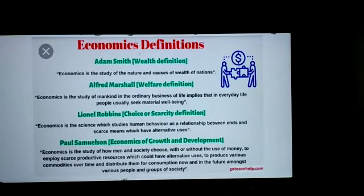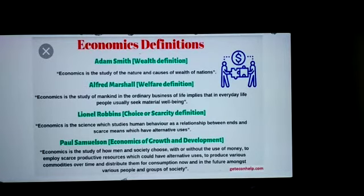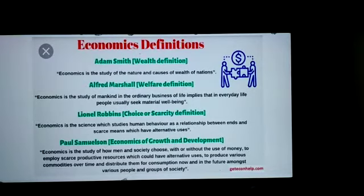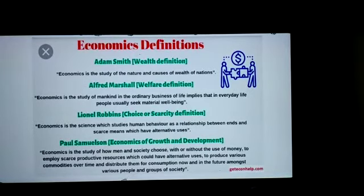We shall now see the definition of economics given by Lionel Robbins. In 1931, Lionel Robbins in his book Nature and Significance of Economics defines economics as a science which studies human behavior as a relationship between ends and scarce means which have alternative uses. Resources satisfying human wants are limited and have alternative uses. Hence, economics deals with the problems of allocation of scarce resources to satisfy human wants to the maximum possible extent. According to him, economics does not deal with norms and thus it is not a normative science but a positive science.